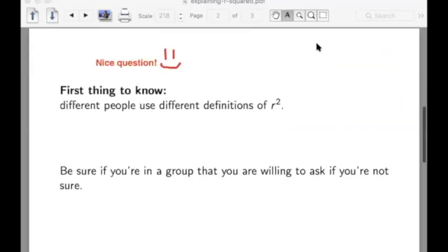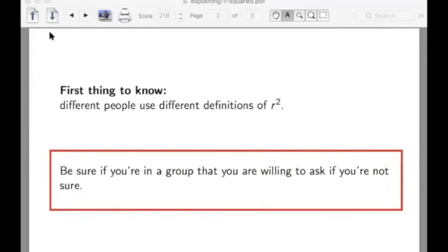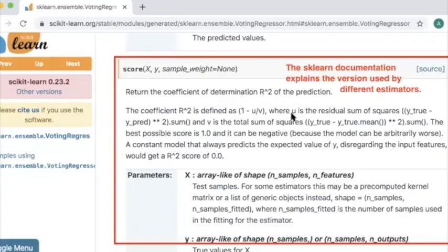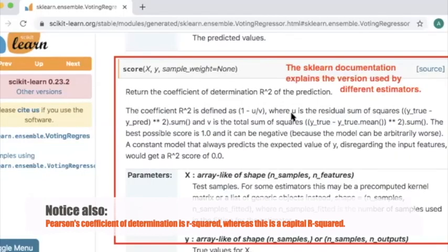The first thing you should know is that different people use different definitions of R-squared. If you're in a group that's working on a project and you're not sure which definition they're using, it's totally legitimate to ask. The sklearn documentation explains the version used by the sklearn estimators.